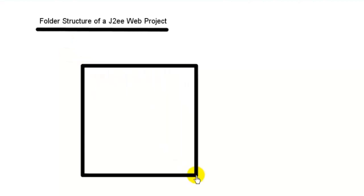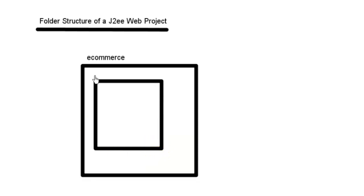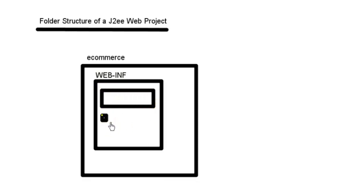We are going to discuss the folder structure of a J2EE web project. For example, we are going to create a project called e-commerce. Inside this folder we'll create another folder called WEB-INF, all in capitals. Then we can have two other folders inside WEB-INF: one called 'classes' and one called 'lib'.